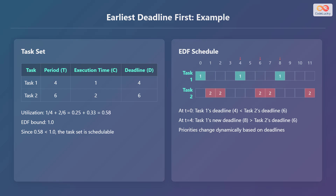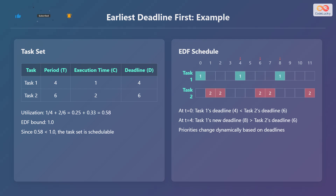The utilization is 1/4 plus 2/6, which equals 0.25 plus 0.33, resulting in 0.58. The EDF bound is 1.0. Since 0.58 is less than 1.0, the task set is schedulable.